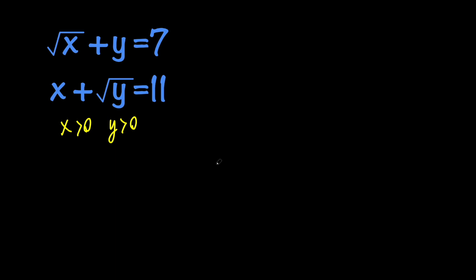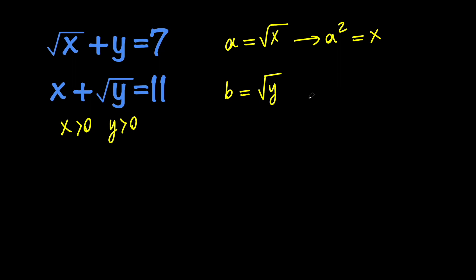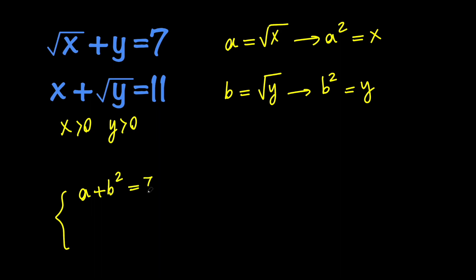To do that, we're going to say that a equals root x and b equals root y. That means that a squared equals x and b squared equals y. So by using these replacements, our system of equations is equivalent to this system: a plus b squared equals 7, and a squared plus b equals 11.